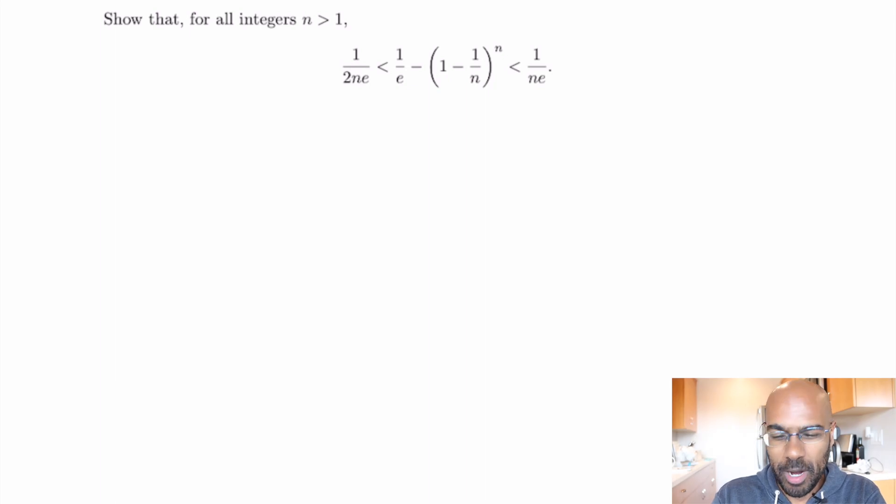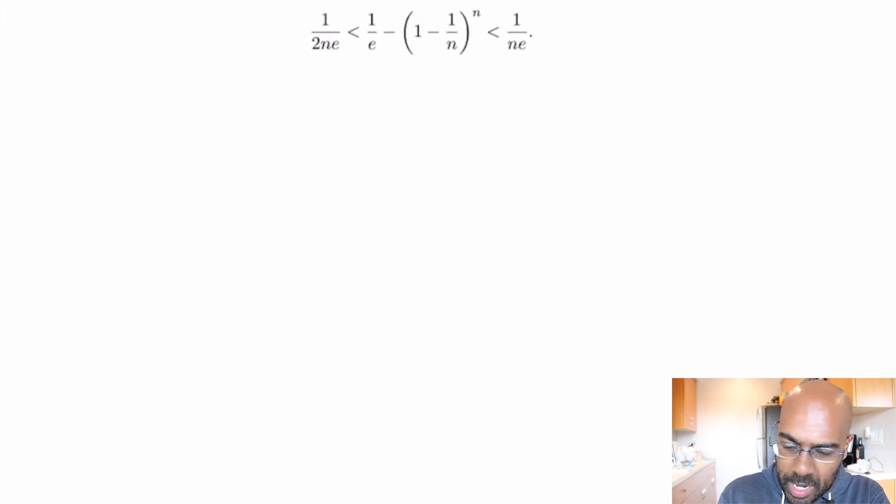Hey, welcome to today's video, I'm Prof Omar. Today we're going to talk about Putnam 2002 number B3, an interesting problem involving an inequality where you compare 1 over e to this number right over here, which actually is an approximation of 1 over e.